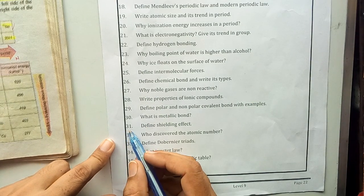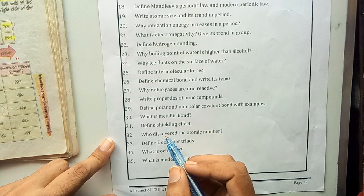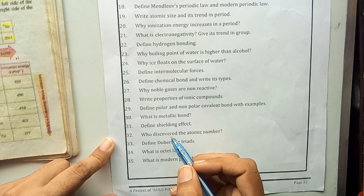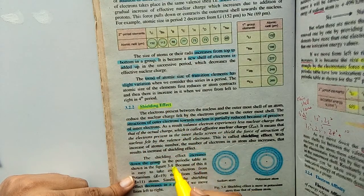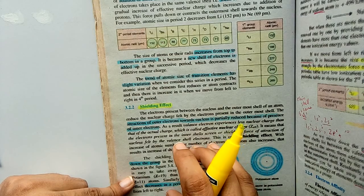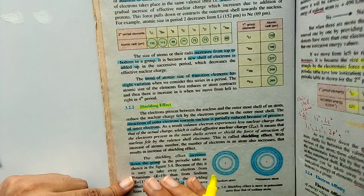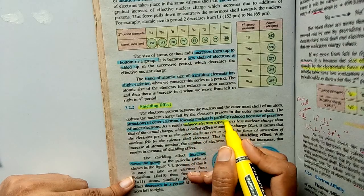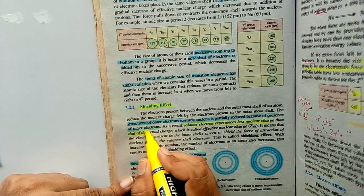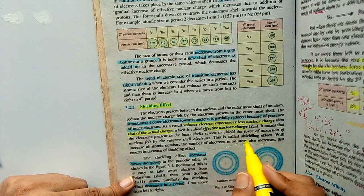Now, number 31: Define shielding effect. Shielding effect is a type of effect which basically reduces the nuclear charge felt by the outermost electrons in an atom. This is given on page number 52 of your book. The electrons which are present between the nucleus and the outermost electrons — the inner electrons — reduce the attraction between the outermost electrons and the nucleus. Due to which, the valence electron experiences less nuclear charge than the actual nuclear charge. This is called the effective nuclear charge, and this effect is called the shielding effect.